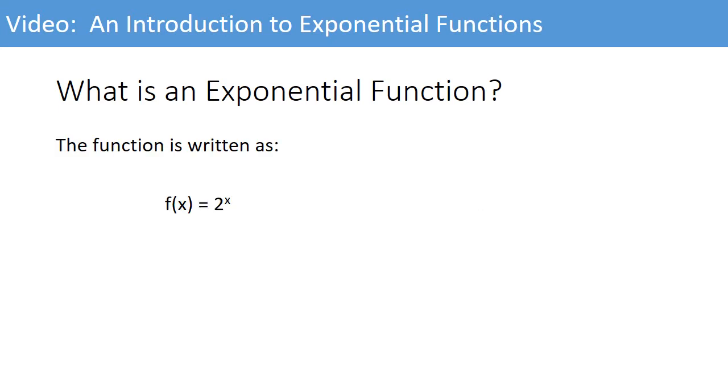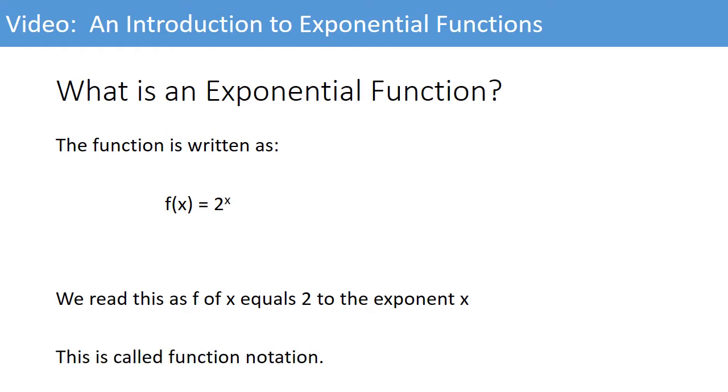The function is written as f of x is equal to 2x. This is called function notation. We read this as f of x equals 2 to the exponent x. The function name is f, the input variable is x, and what happens to the variable is defined on the right-hand side of the expression.